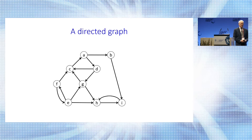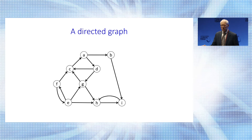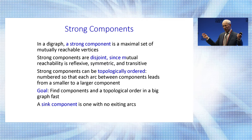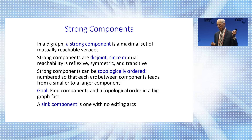Here's a directed graph — just a collection of vertices and arcs connecting vertices. This is a one-way street network. We can get from A to B, but not necessarily back again. These graphs model all kinds of situations and we're interested in processing them. The definition of strong components: we're interested in mutual reachability between pairs of vertices — can I get from A to B and back again? Mutual reachability is an equivalence relationship, so it partitions the vertices into equivalence classes. These are the strong components. Our goal is to find the strong components fast.